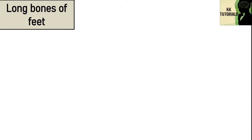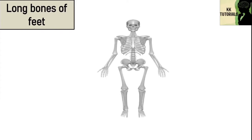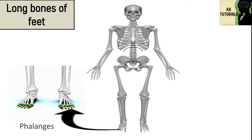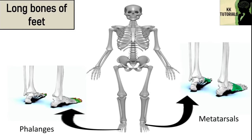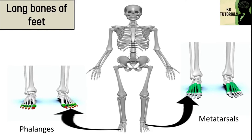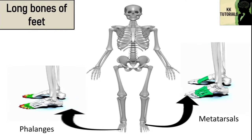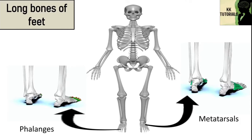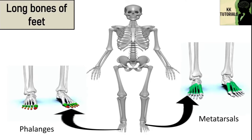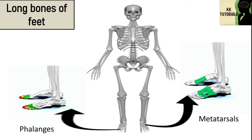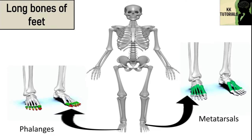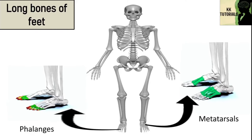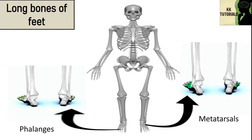Long bones of feet include two types: phalanges and metatarsals. The foot contains five metatarsals, numbered in Roman numerals from one to five. Metatarsal bones are analogous to metacarpals in the hand. Phalanges are the bones of the toes and are further divided into proximal, intermediate and distal phalanges.